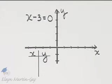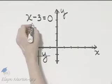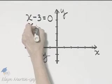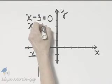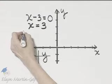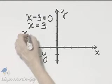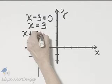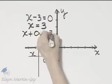To graph x minus 3 equals 0, let's go ahead and write it in standard form: x equals 3. And if it bothers you with no y here, you can write it as x plus 0y equals 3.